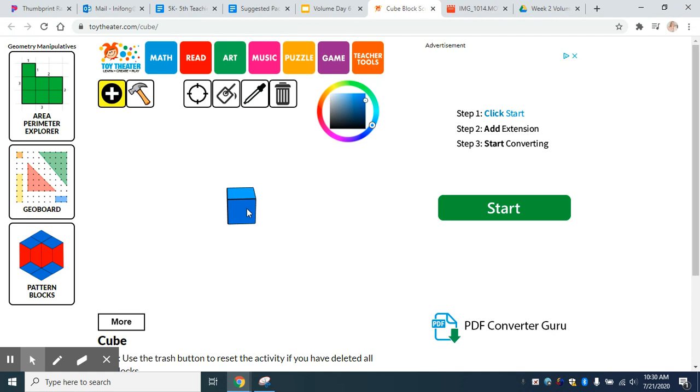Okay, so I know that this was three layers of six unit cubes. So I just click and drag here. Here's my first layer of six. Here's my second layer of six. And here's my third layer of six.